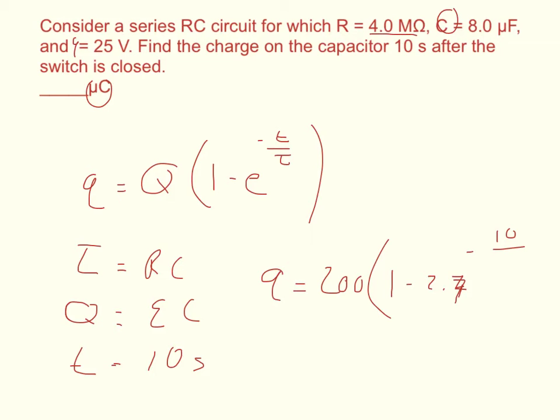So we've got to take that times 10 to the 6, so 4 million times C, and we want that in farads for this to work, so 8 times 10 to the negative 6. So the 10 to the 6 and the 10 to the negative 6 cancel each other out, and then what we get is 4 times 8, and so T equals 32.